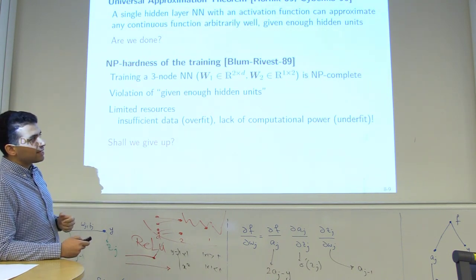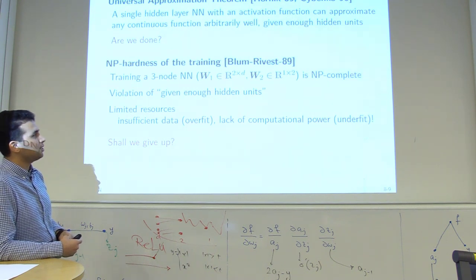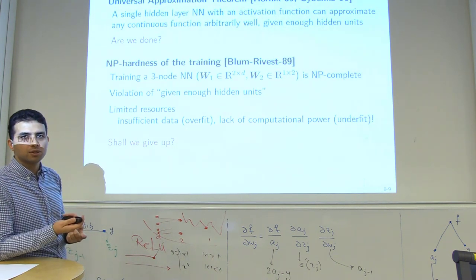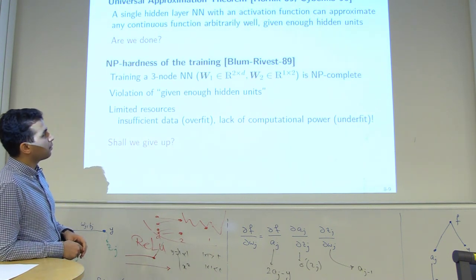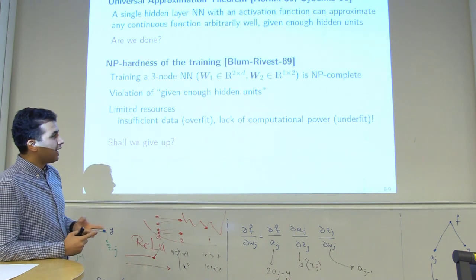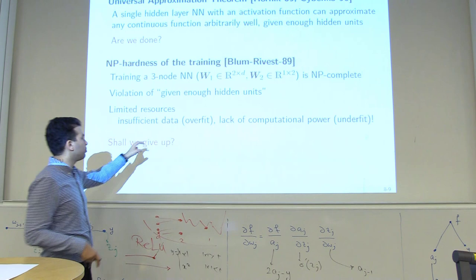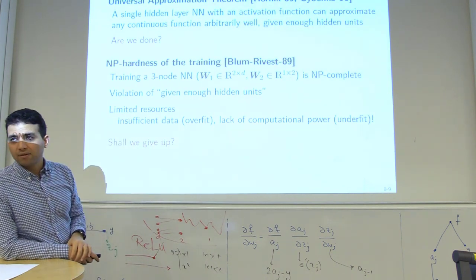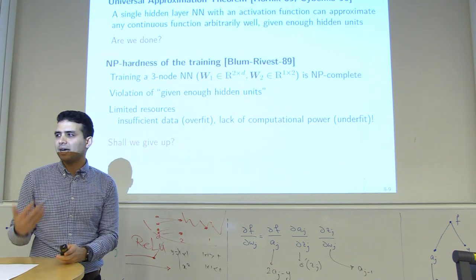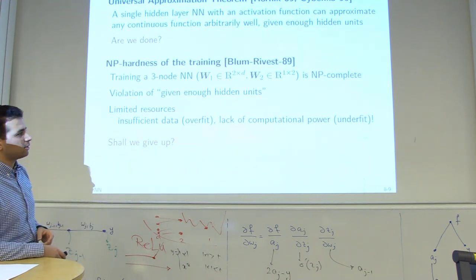The NP-hardness result also doesn't restrict how many hidden units or how large the data space must be. The universal approximation theorem requires no restriction on hidden units or input data. With limited data or limited computational resources, you may overfit or underfit — the problem isn't achievability, it's that your algorithm cannot find the solution. But there is a solution; your algorithm just can't reach it.